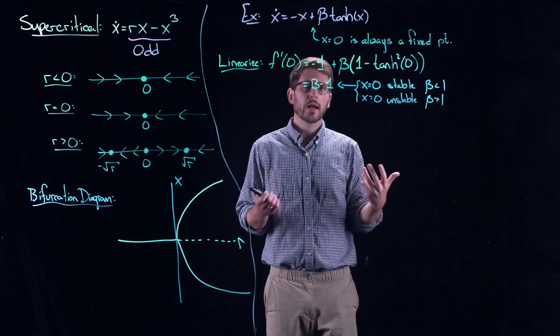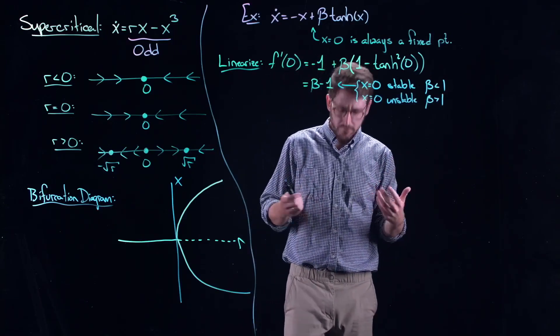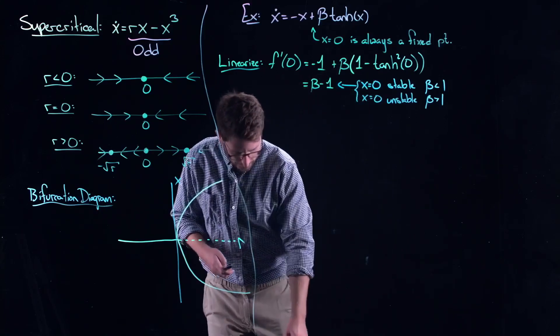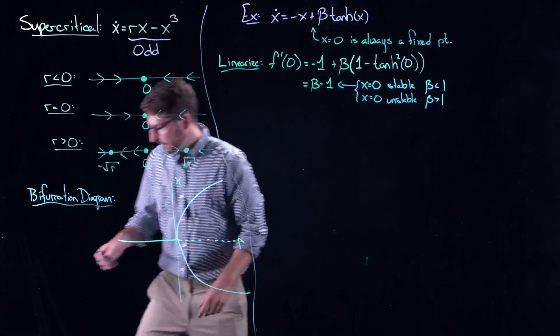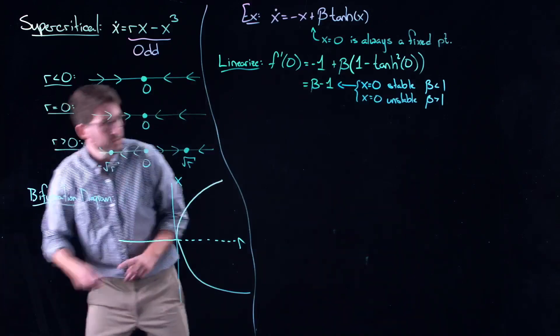Now, essentially what this tells me is that x equal to zero is stable when beta is less than one. And x equal to zero is unstable when beta is greater than one. So the question is, what happens? What does the bifurcation look like in this actual bifurcation diagram or in this system?